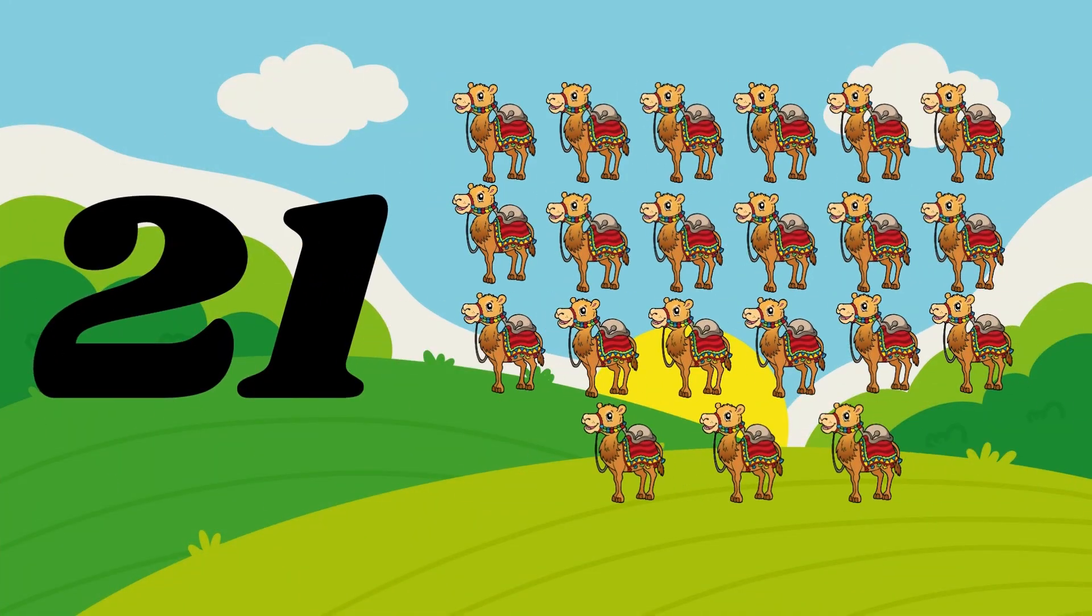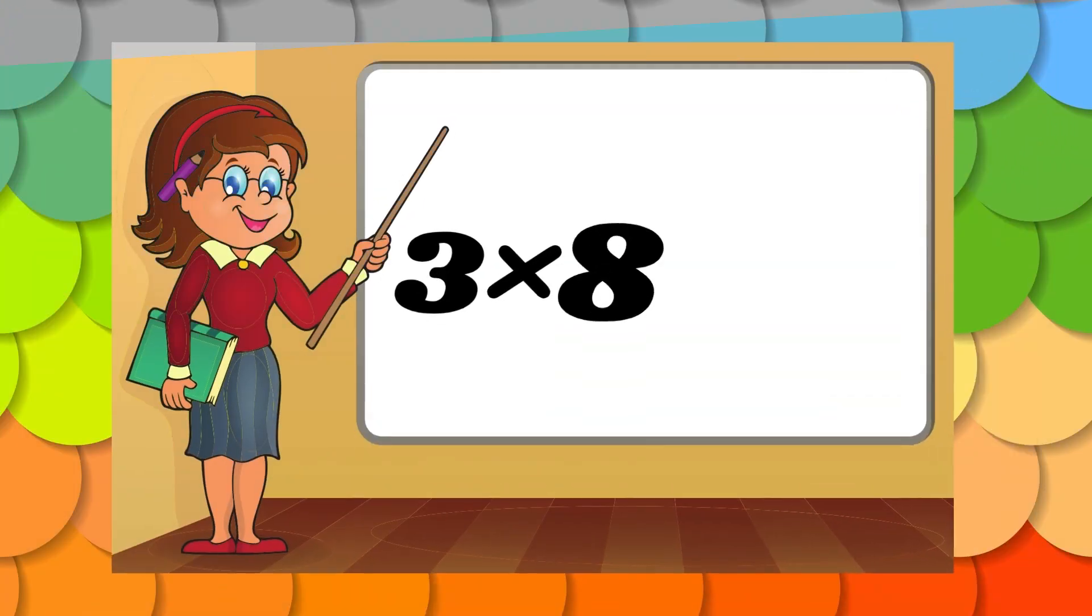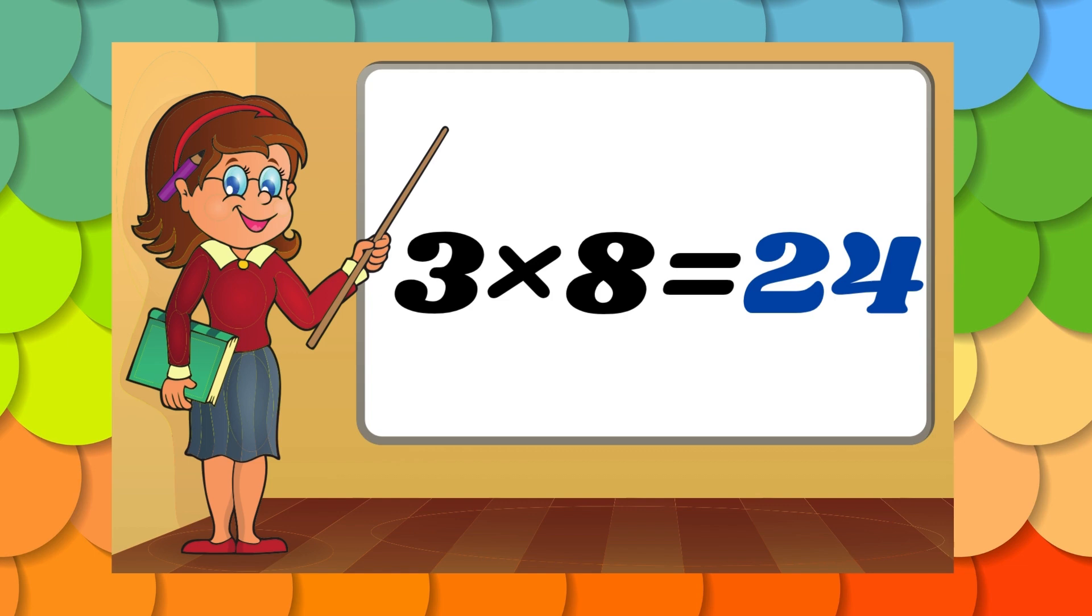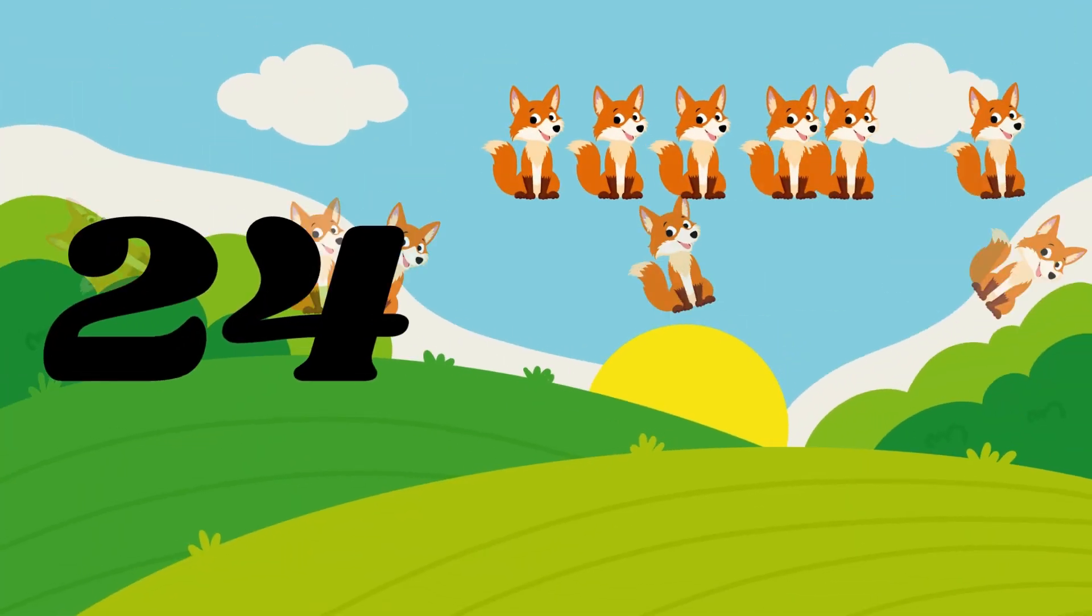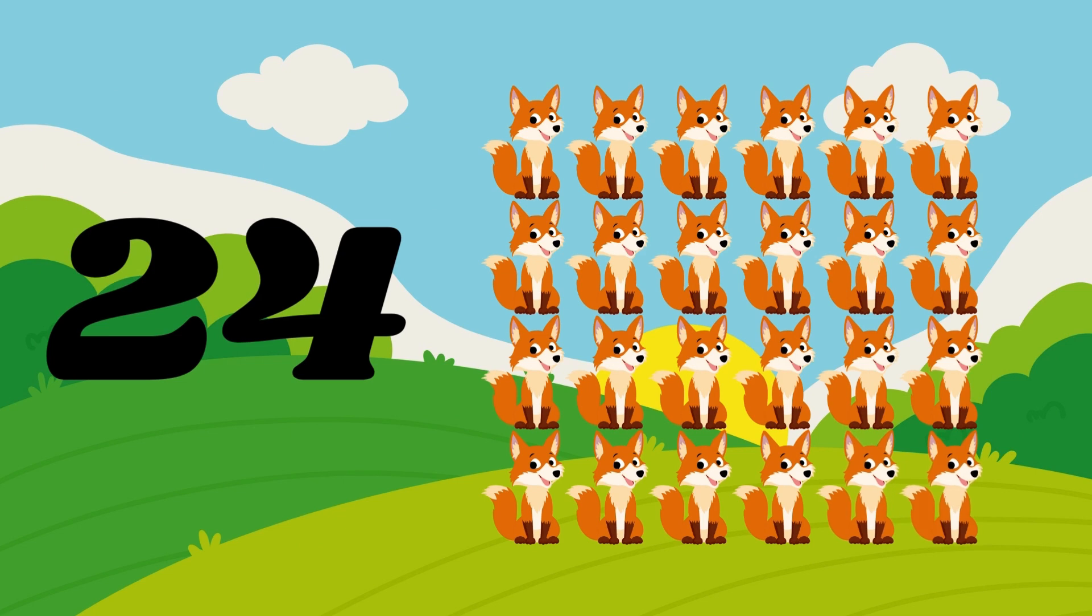Twenty-one camels. Three eights are twenty-four. Three eights are twenty-four. Twenty-four wolves.